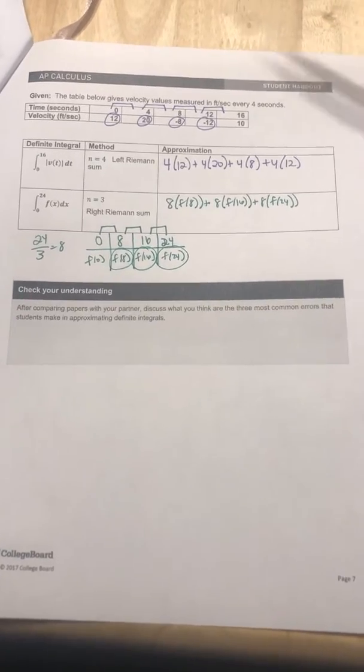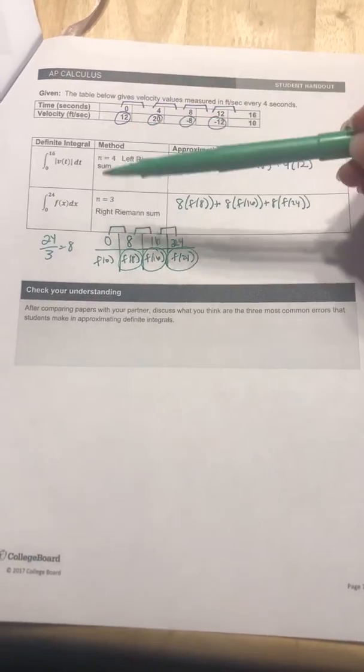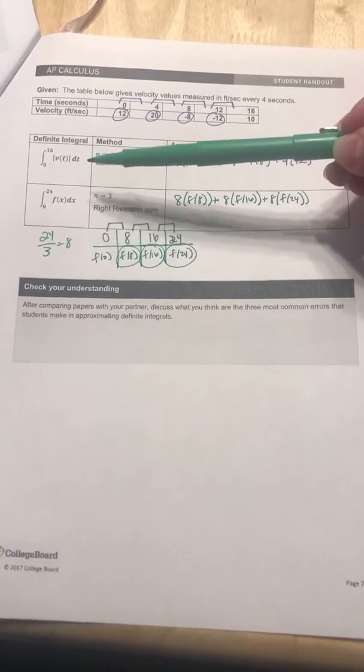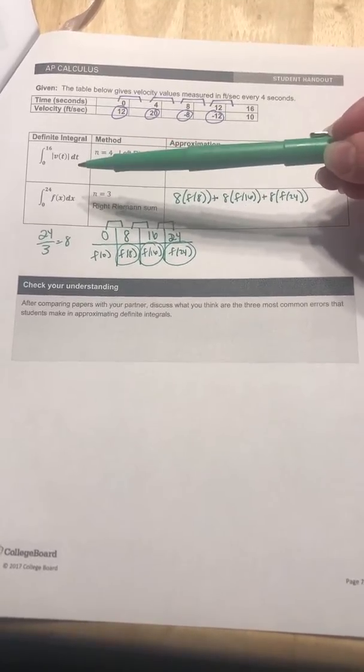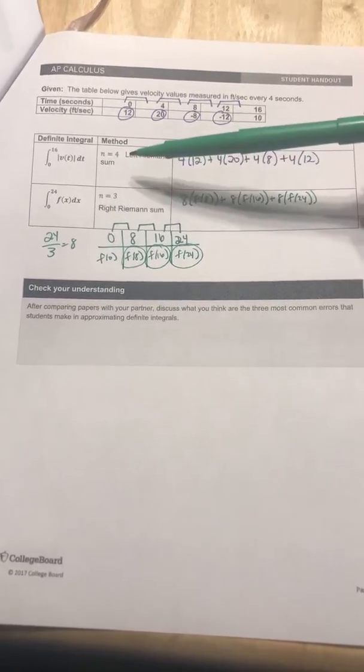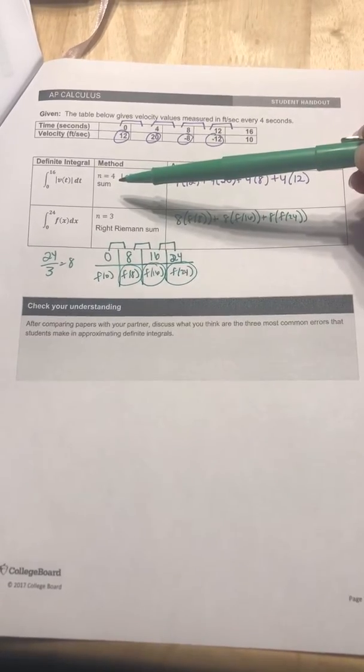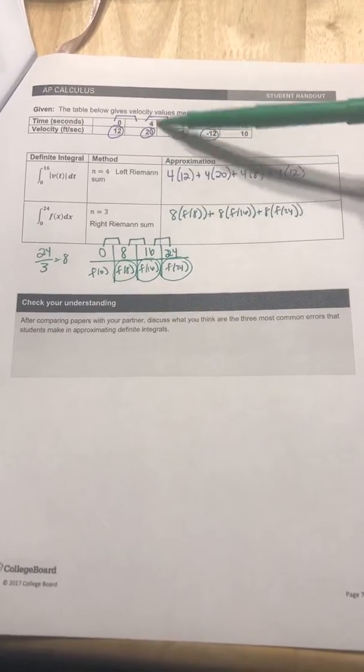For the last page on this packet, they're giving you a table again. They've got from 0 to 16, and they're doing the absolute value of velocity, so speed again. And they want the four intervals, and they want you to do the left Riemann sum.